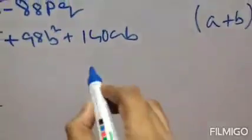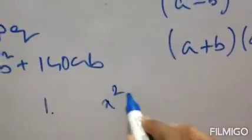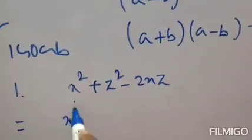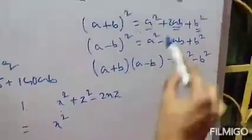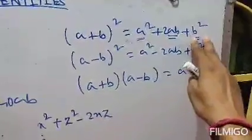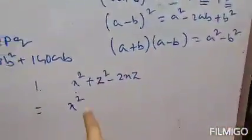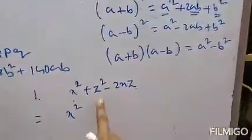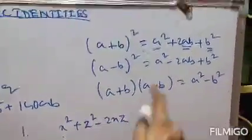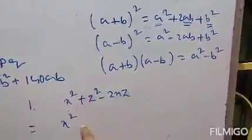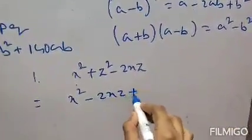Worksheet 6, question 1: x²+z²-2xz. Now compare this with the identities. Here one sign is minus and one is plus, so Identity 2 is matched. The first term is x², which is your a², the third term z² is your b², and the middle term 2xz is your 2ab. We will arrange the terms as x²-2xz+z².